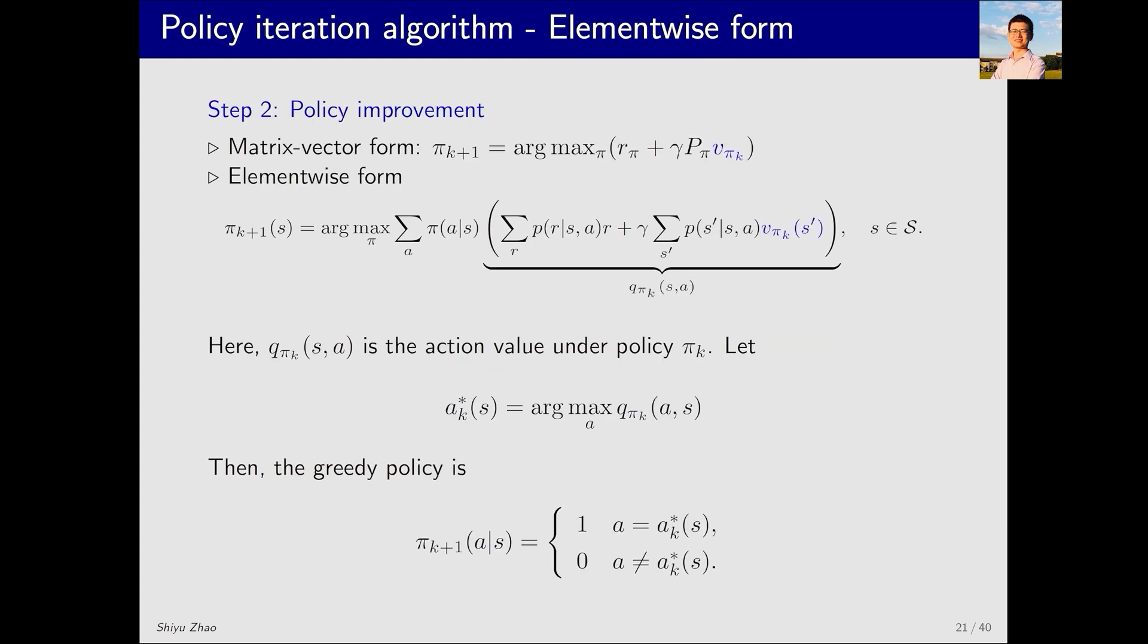The next step is policy improvement. This is its matrix-vector form. Having found vπk in the previous step, the next step is to update to πk+1. The method is to solve this maximization. In its element-wise form, it appears like this. vπk is here, these are known, and then I need to solve for π. How? Inside these parentheses is actually qπk, which I can calculate. Given several qπk, what policy should I choose? We already know that the optimal new policy is to choose this ak star, which is the action corresponding to the largest qπk.